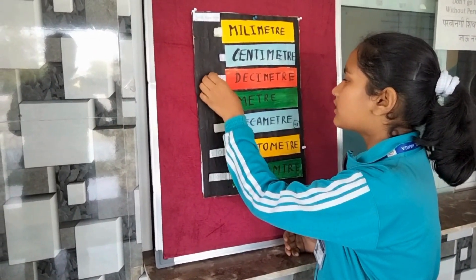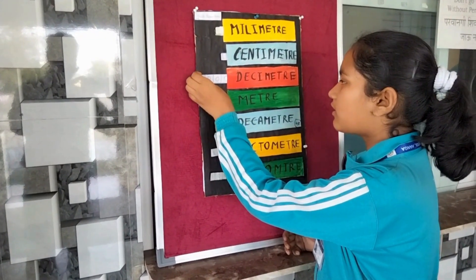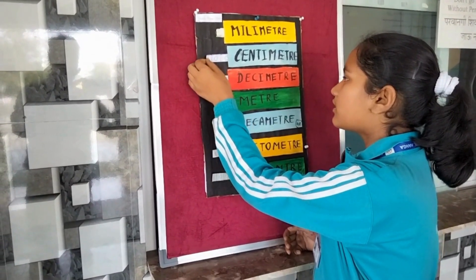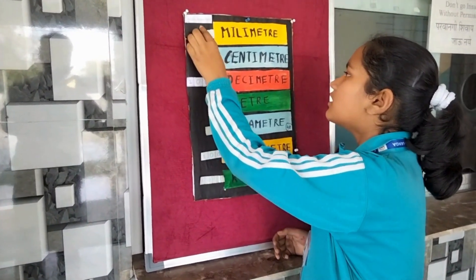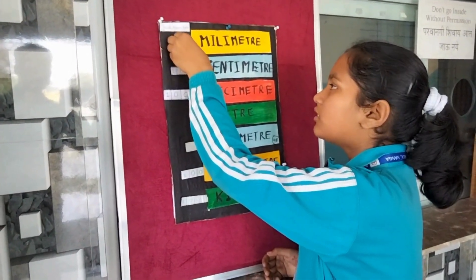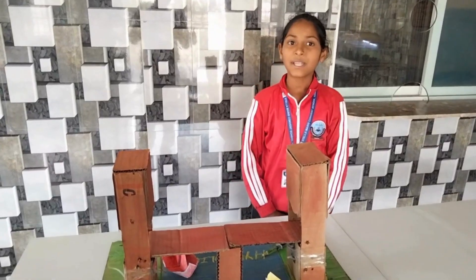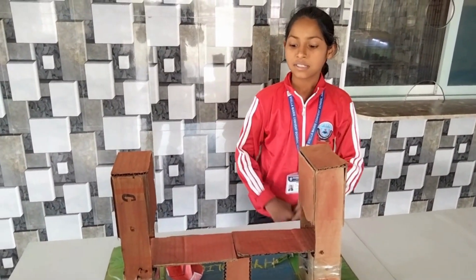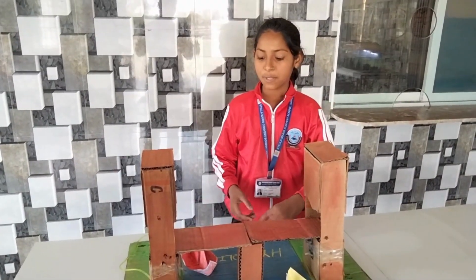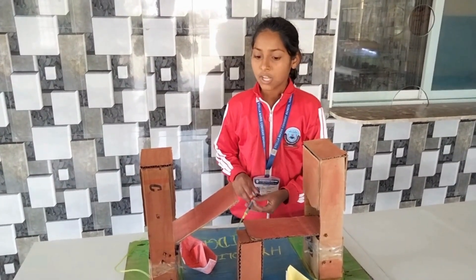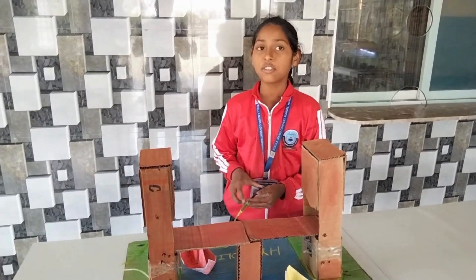One decimeter is equal to 1 by 10 meter. One centimeter is equal to 1 by 100 meter. One millimeter is equal to 1 by 1,000 meter.